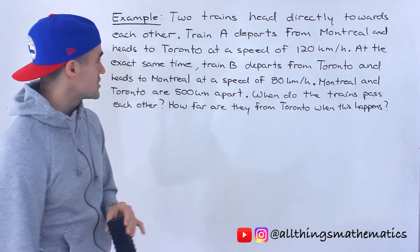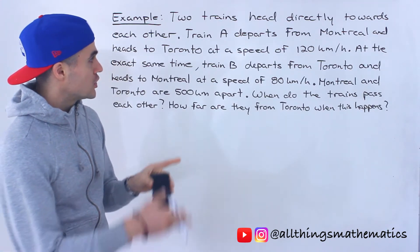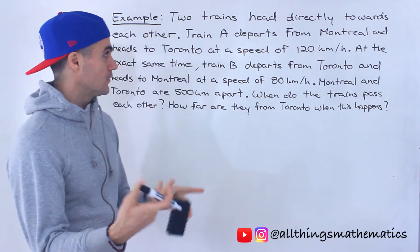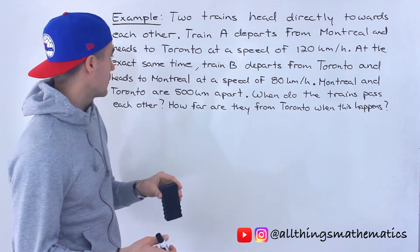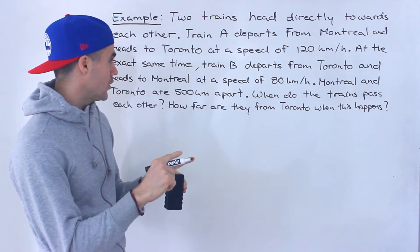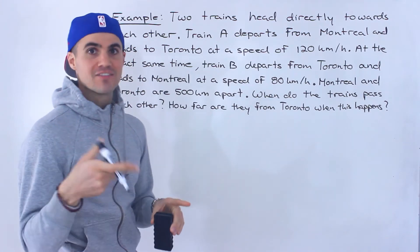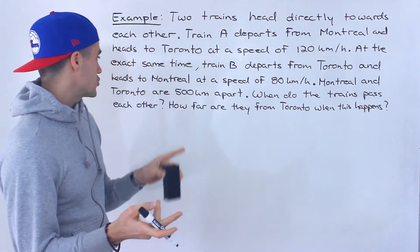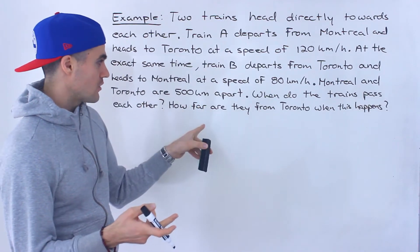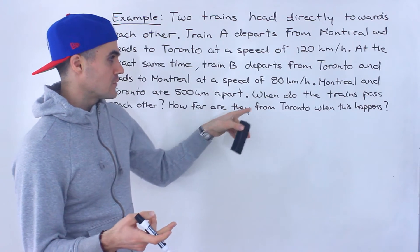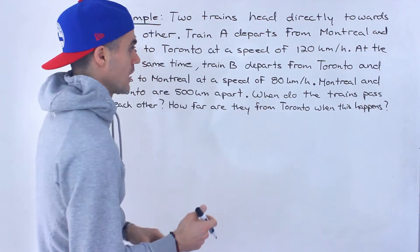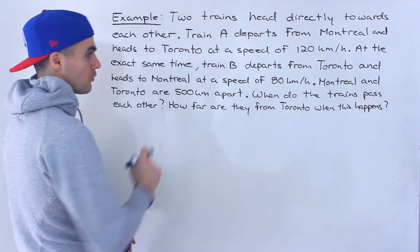So two trains head directly towards each other. Train A departs from Montreal and heads towards Toronto at a speed of 120 kilometers per hour. At the exact same time, train B departs from Toronto and heads to Montreal at a speed of 80 kilometers per hour. Montreal and Toronto are 500 kilometers apart. When do the trains pass each other, and how far are they from Toronto when this happens?